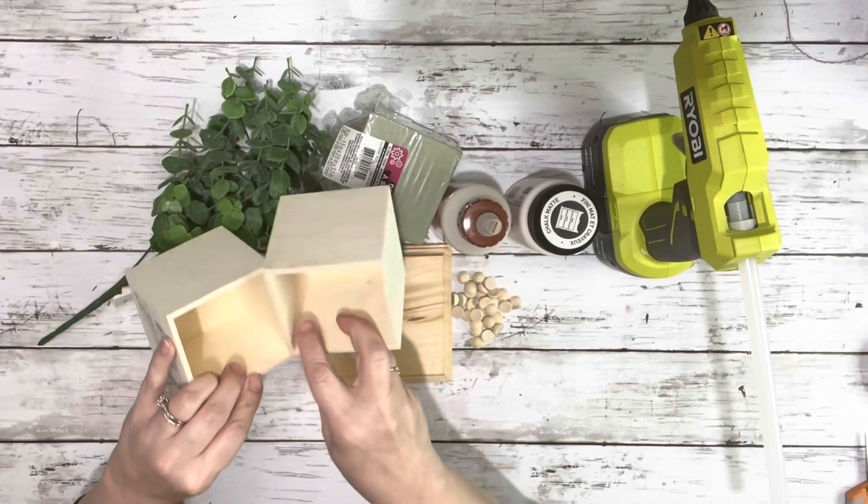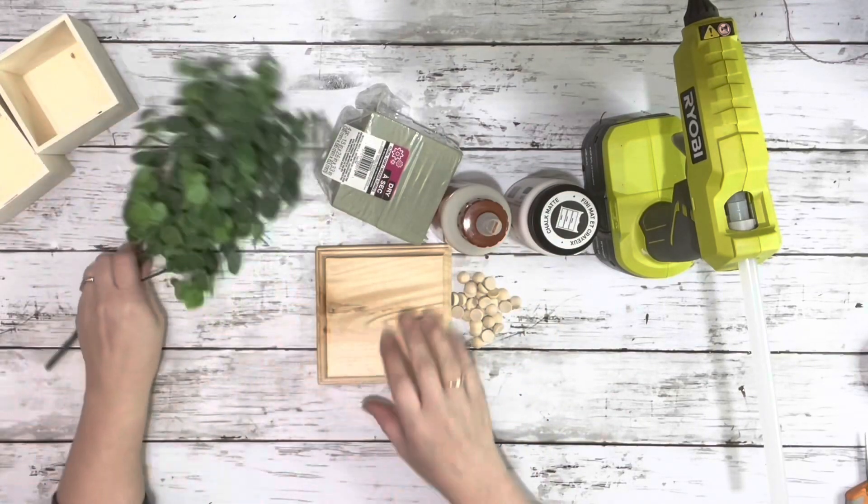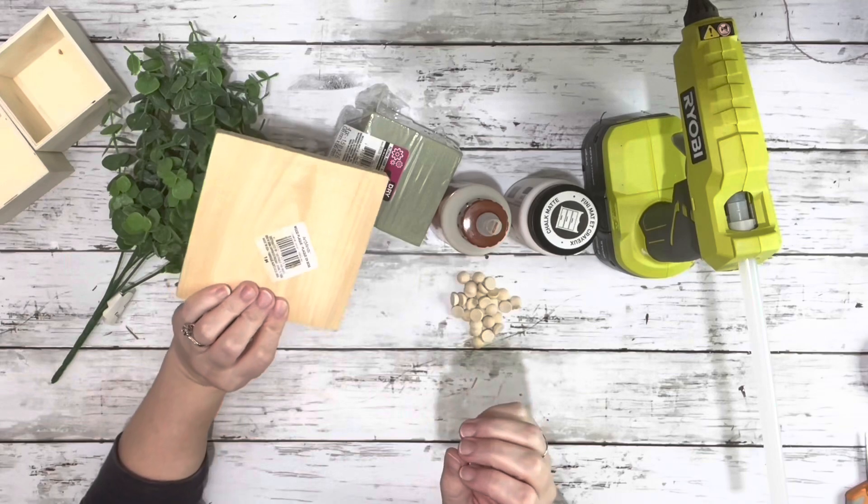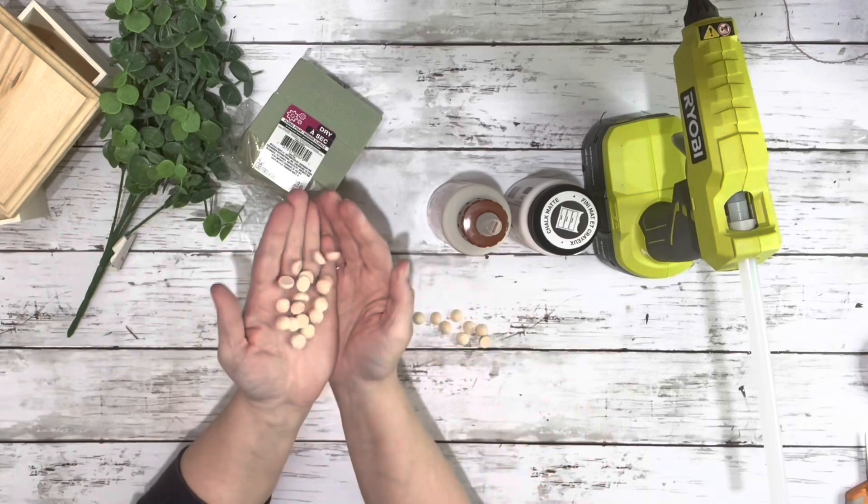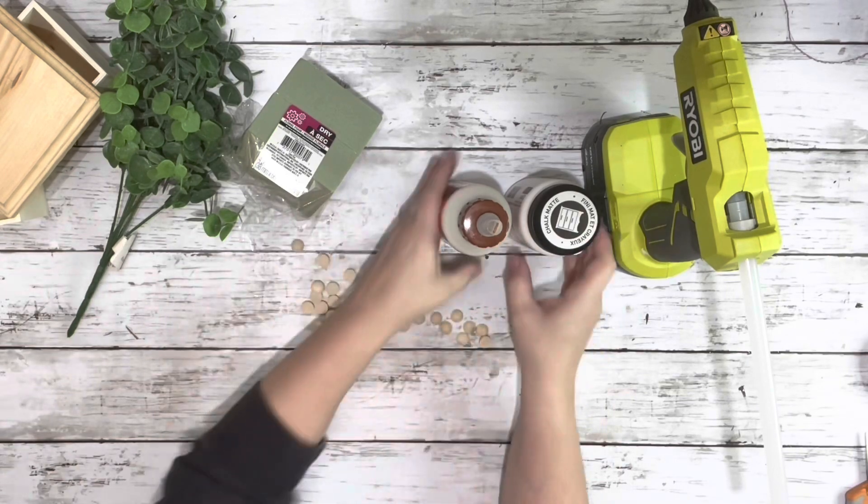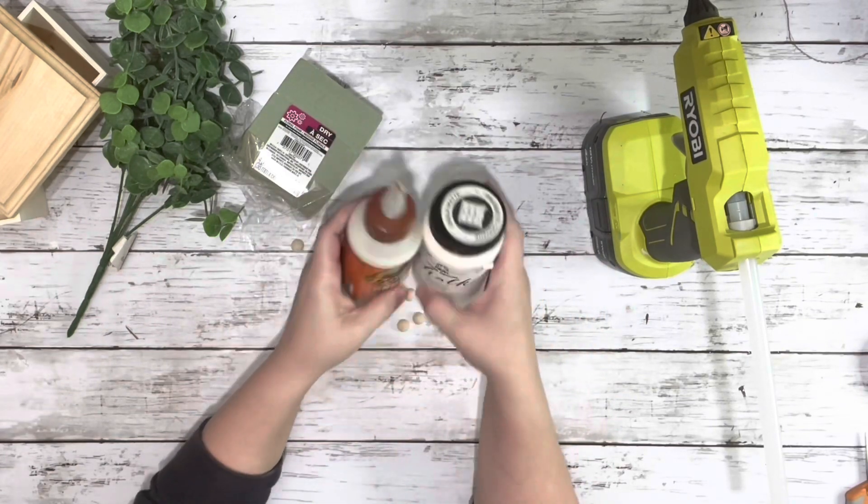I used two of these wooden boxes from Dollar Tree. I just removed the drawers. This wooden plaque from Hobby Lobby, eucalyptus from Walmart, some floral foam, half round beads, cottage white chalk paint, wood glue, and hot glue.